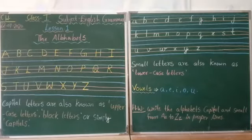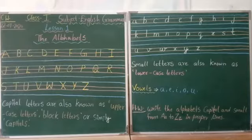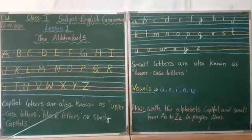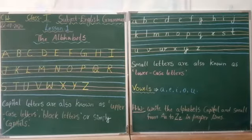Now capital letter how to write? You have to start from 1st line and you have to write in 3 lines. These are called capital letter alphabets. Now capital letter alphabets are called uppercase letters or block letters or simply capital letters.